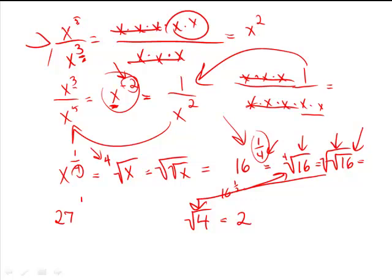Let's say 27 to the one-third times 8 to the two-thirds is equal to x squared. What does x equal?